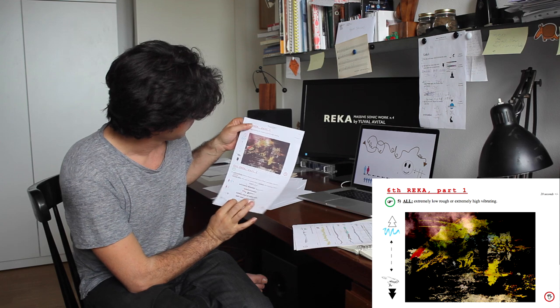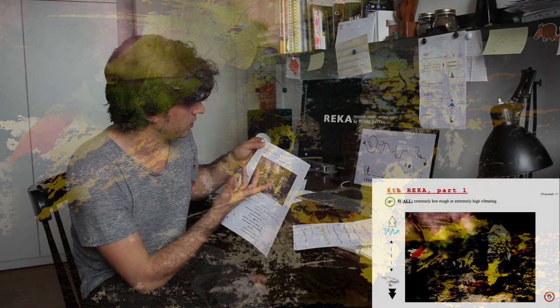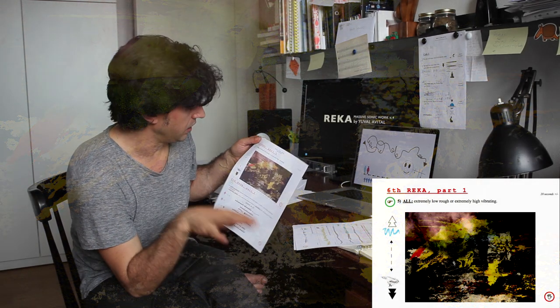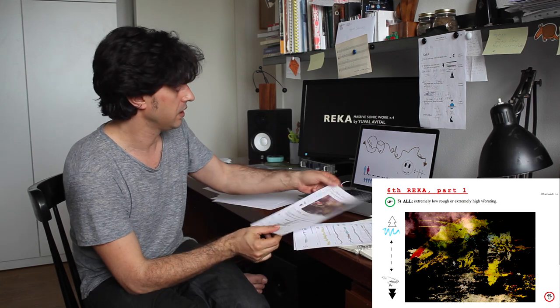Here we are in page number 12 in element number five where another reka which is very complex. You have something of clouds and something which is like light and you have like a shade of face. And here all do always extremely rough low or extremely high vibrating voice, so I guess most of the men will choose the low one and most of the women will go the high one.